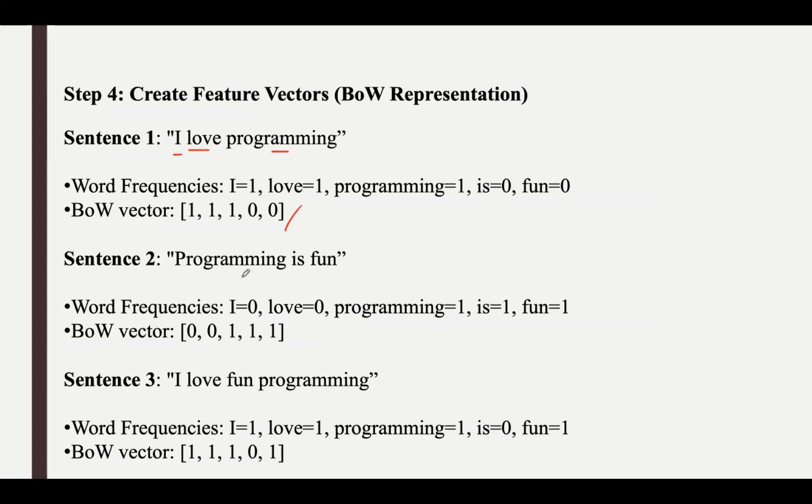For the second sentence, 'programming is fun,' 'I' is not existing in the sentence, so that is 0. 'Love' is not existing, that value is also 0. Whereas 'programming,' 'is,' and 'fun' occurred once in the sentence, so their values will be 1. This is the vector representation.